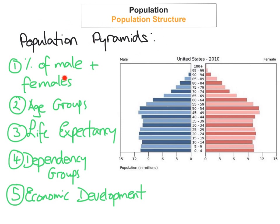Population pyramids can tell us five different things. First, they can tell us the percentage of males and females. They can also show us the percentage of different age groups. For example, if somebody asks what percentage of females are in the zero to four group for the United States, we can see that's about 10%. For males aged 85 to 89, you'd go across to that row and it's roughly about 1.5%.